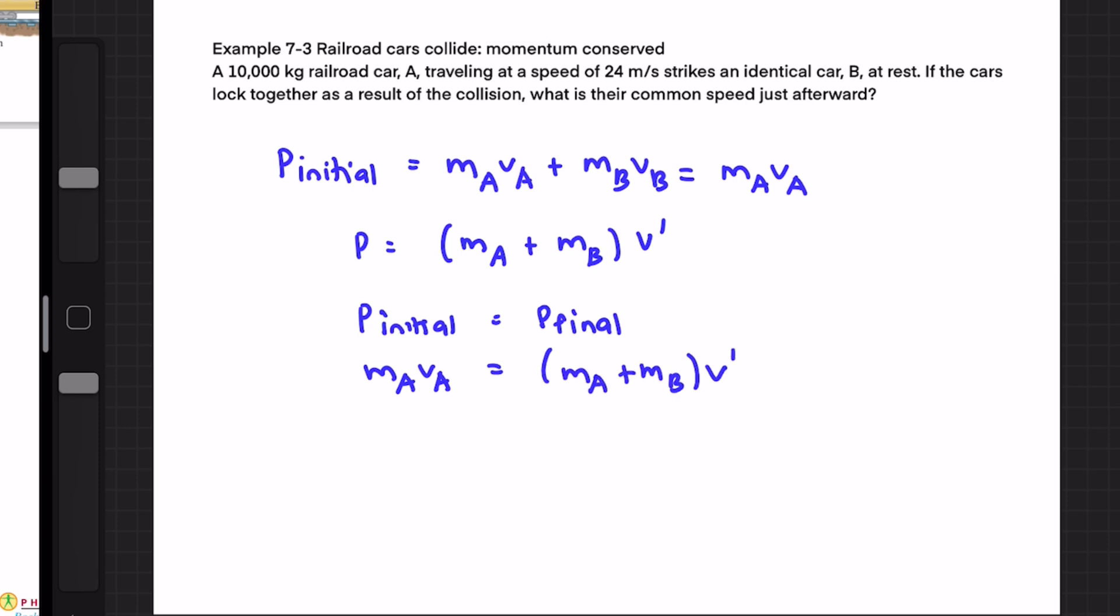And so to solve for v prime we just obtain v prime equals mA divided by mA plus mB times vA. So it's just like some rearranging of the formula in order to get v prime.